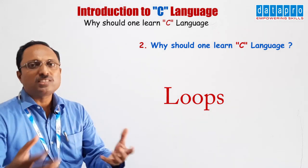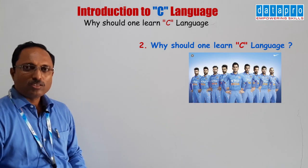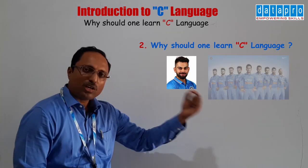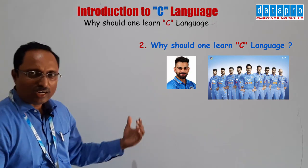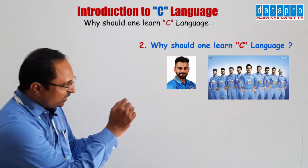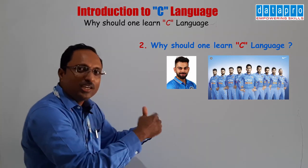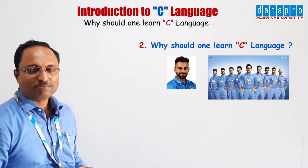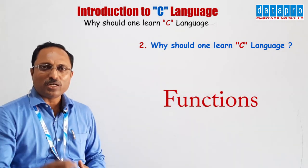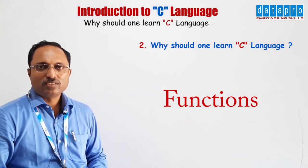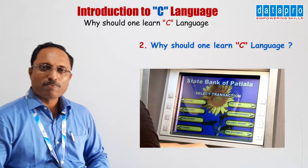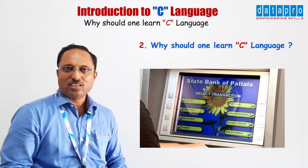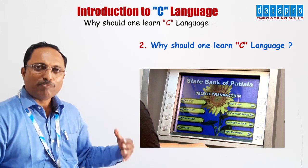Loops are used whenever you need to repeat something. Consider a photograph with several faces — you want to find whether a particular person is present. If there are 10 persons in the photograph, you have to compare with each person's face repeatedly until it is found. That is a loop. Functions are small tasks written in a program. In the context of an ATM, deposit is a function, withdrawal is a function, and changing the PIN number is a function. All this can be learned perfectly and easily through C programming.